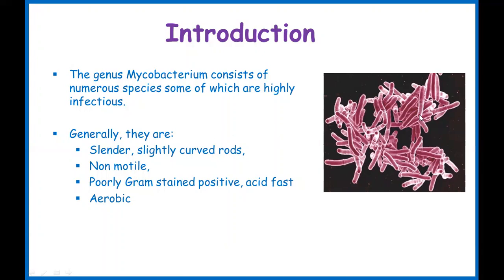In general, looking at the characteristics: mycobacteria are slender and normally rod-shaped, but their rod shape has some curve to it — they are slightly curved. They do not have flagella, so they are non-motile. Mycobacteria are usually aerobic — strict aerobes — meaning they survive in the presence of oxygen.